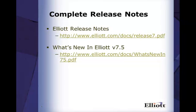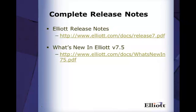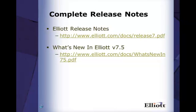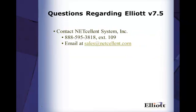To learn more about the features in this presentation and all features in version 7.5, please download the PDF document in the first link. For a shorter version about what has changed since version 7.4, you can download the PDF document in the second link. This concludes the What's New in Elliott version 7.5 presentation. If you have any questions, feel free to contact us anytime. Thank you for viewing our online presentation.